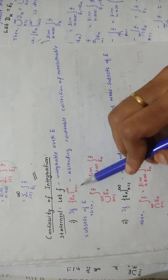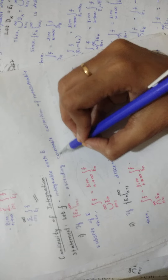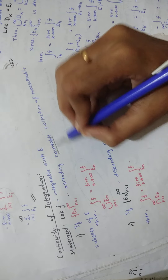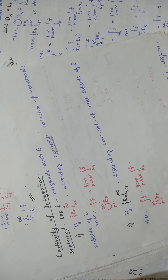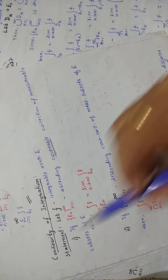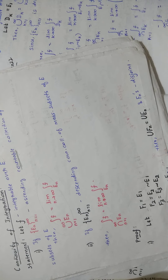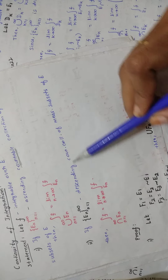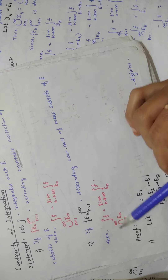The first part is: if En, n equal to 1 to infinity, is an ascending countable collection of measurable subsets of E, then this condition will be there — that is what you have to prove in the first part. In the second part, you are taking a descending countable collection of measurable subsets of E, and then you have to prove the corresponding condition.